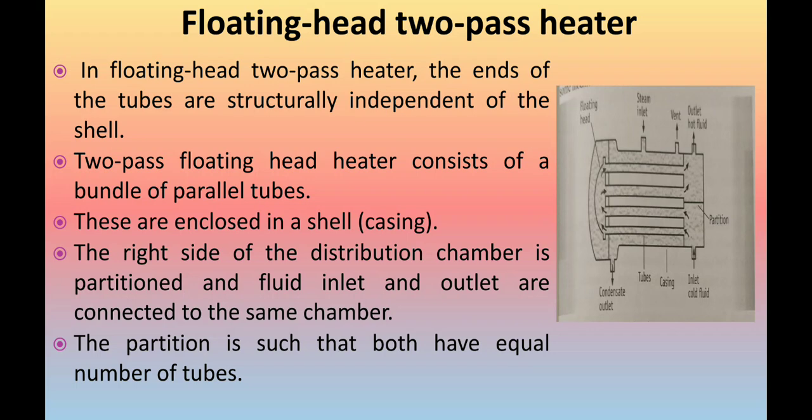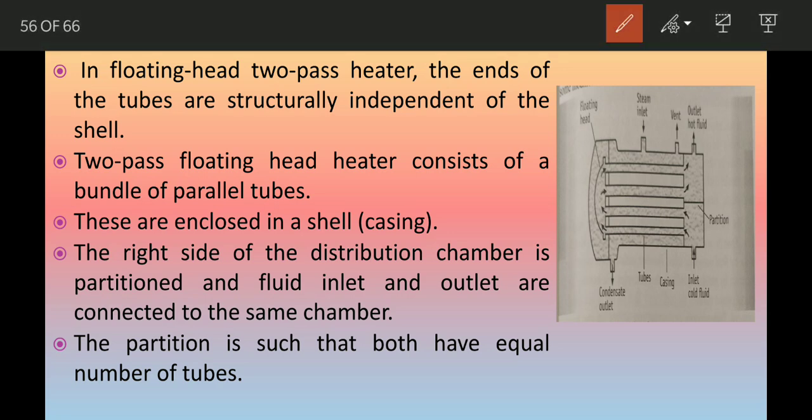If we talk about the construction of two-pass heater, it consists of the same components as a tubular heater with some modifications. The two-pass floating head heater consists of a bundle of parallel tubes. These are enclosed in a casing. The right side of the distribution chamber is partitioned, and the fluid inlet and outlet are connected to the same chamber.